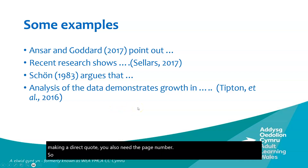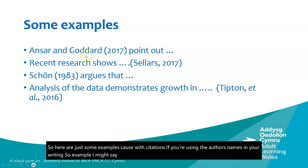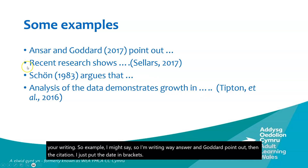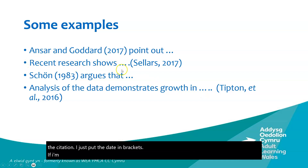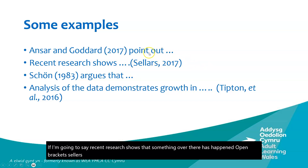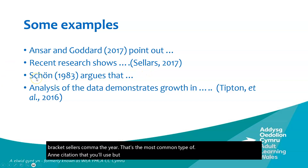With citations, if you're using the author's names in your writing, for example 'Anson and Goddard point out...', you just put the date in brackets. If writing 'recent research shows that something has happened,' you open brackets, put the author's surname, comma, the year — that's the most common type of citation you'll use.